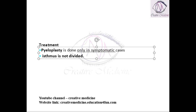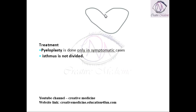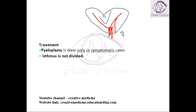The isthmus is not divided. Why? Because the blood supply of the kidney mainly goes through the isthmus. So if you disturb the isthmus, obviously the blood supply of both kidneys will be disturbed, resulting in renal infarction. So we do not divide the isthmus.